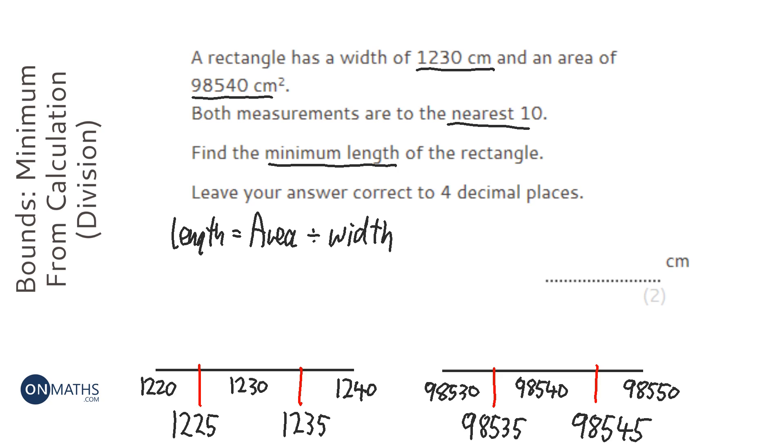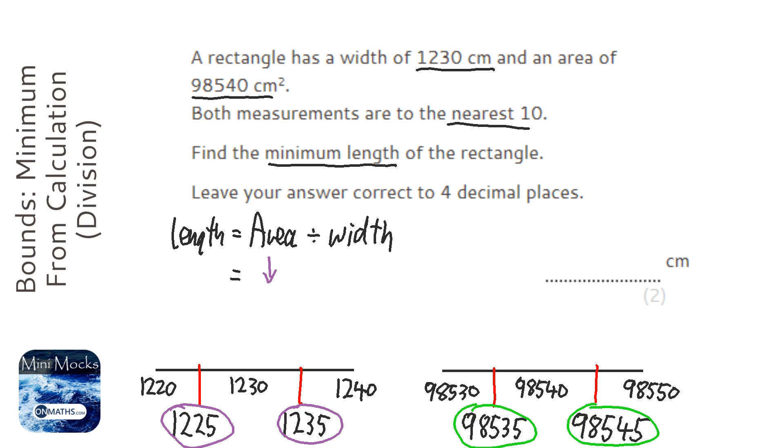Okay, so what we want to do is work out what configuration of these two numbers here and these two numbers here will give us the smallest answer. So to get the smallest answer, I want the smallest possible area, so it gets it nice and small. But when I divide, it makes it even smaller if the thing I'm dividing by is as big as possible.